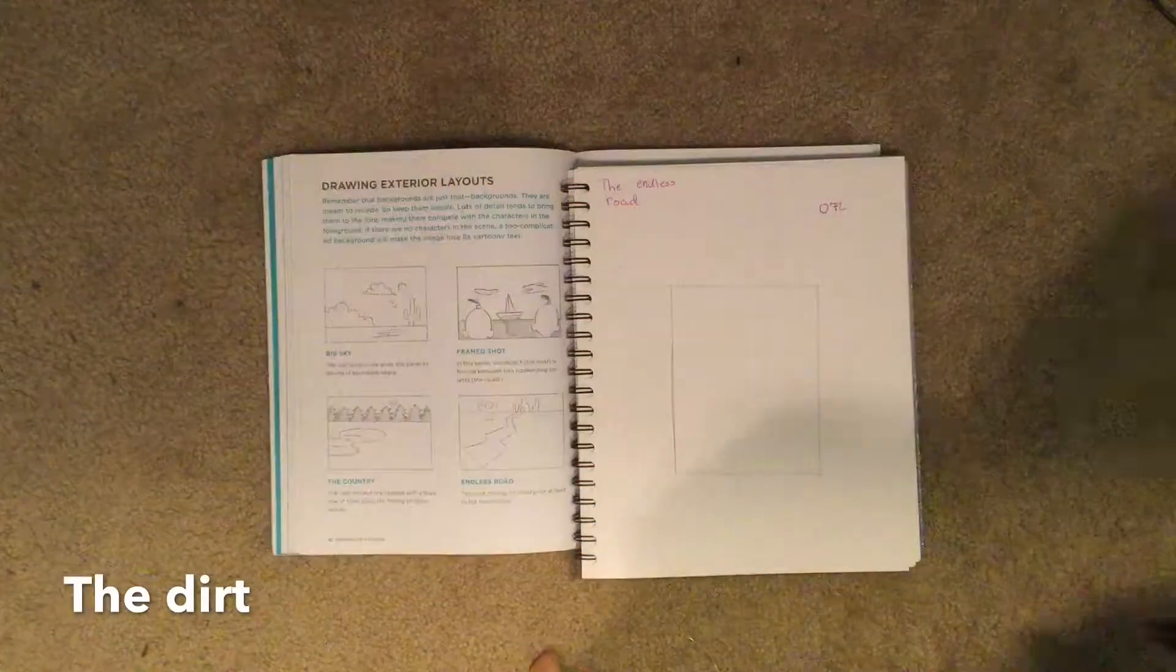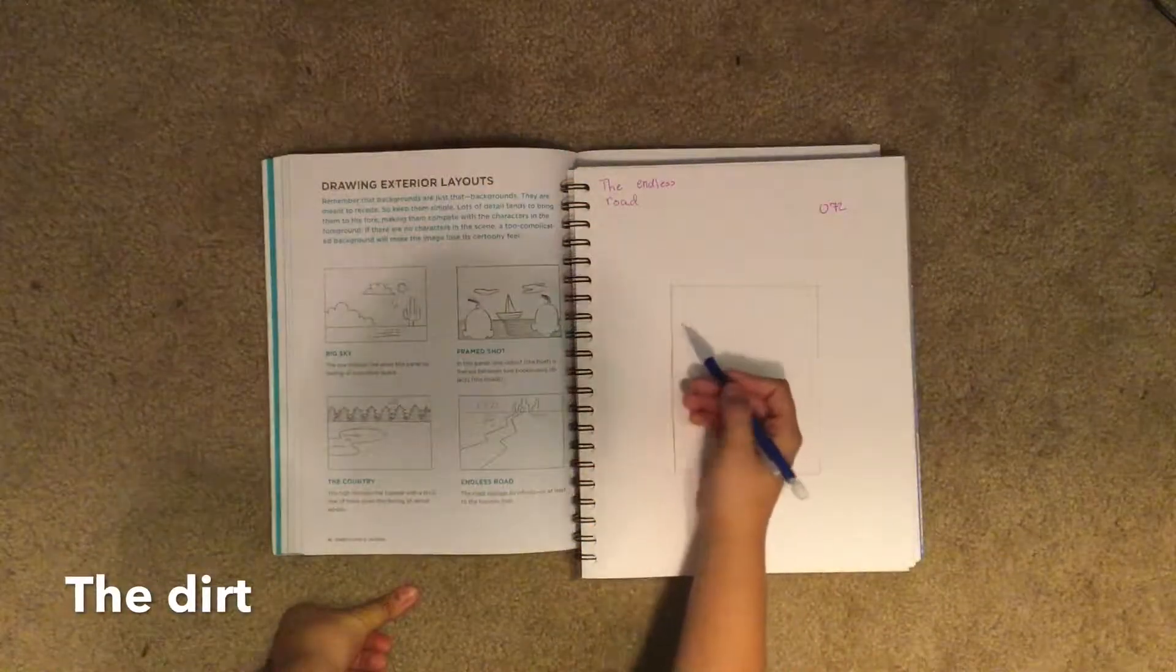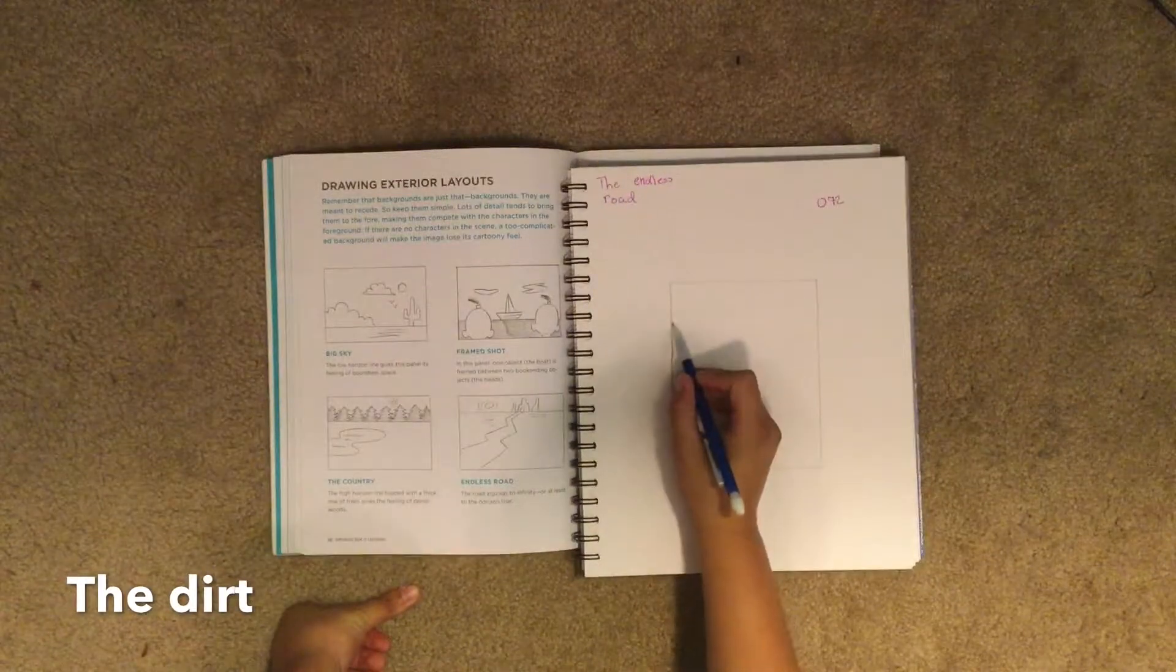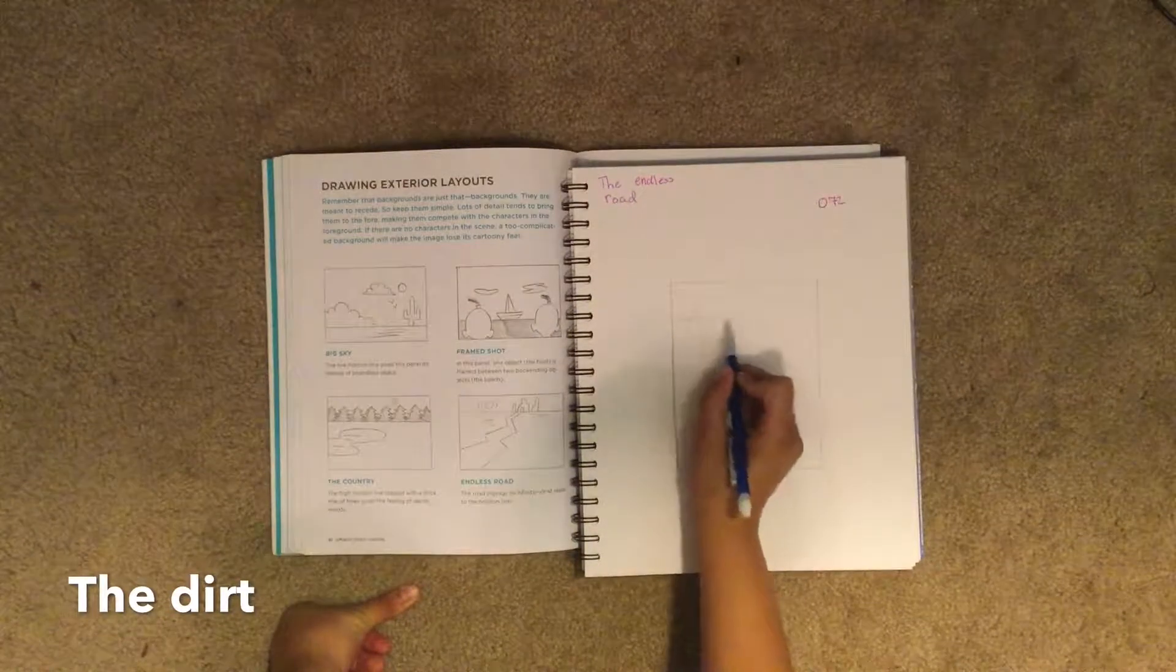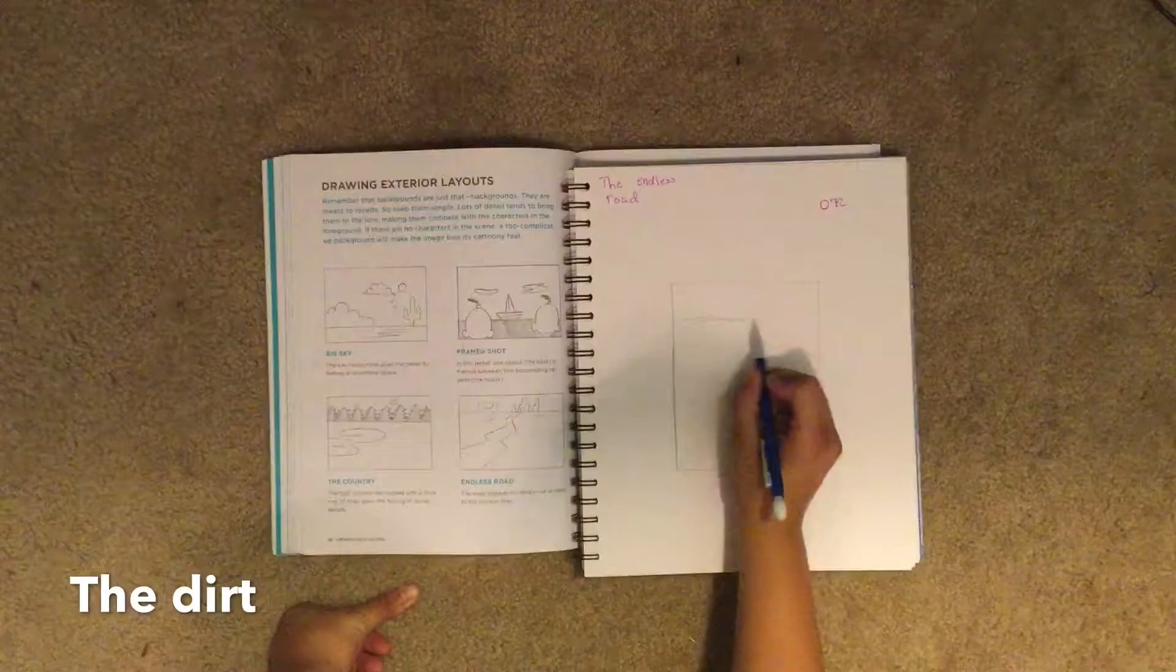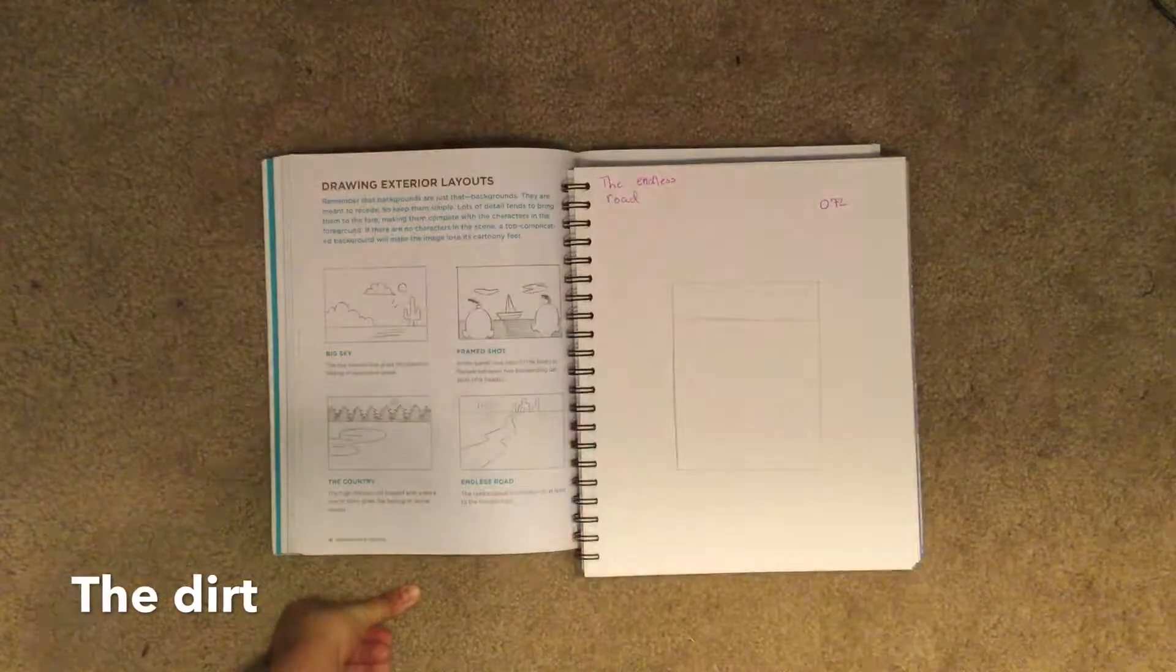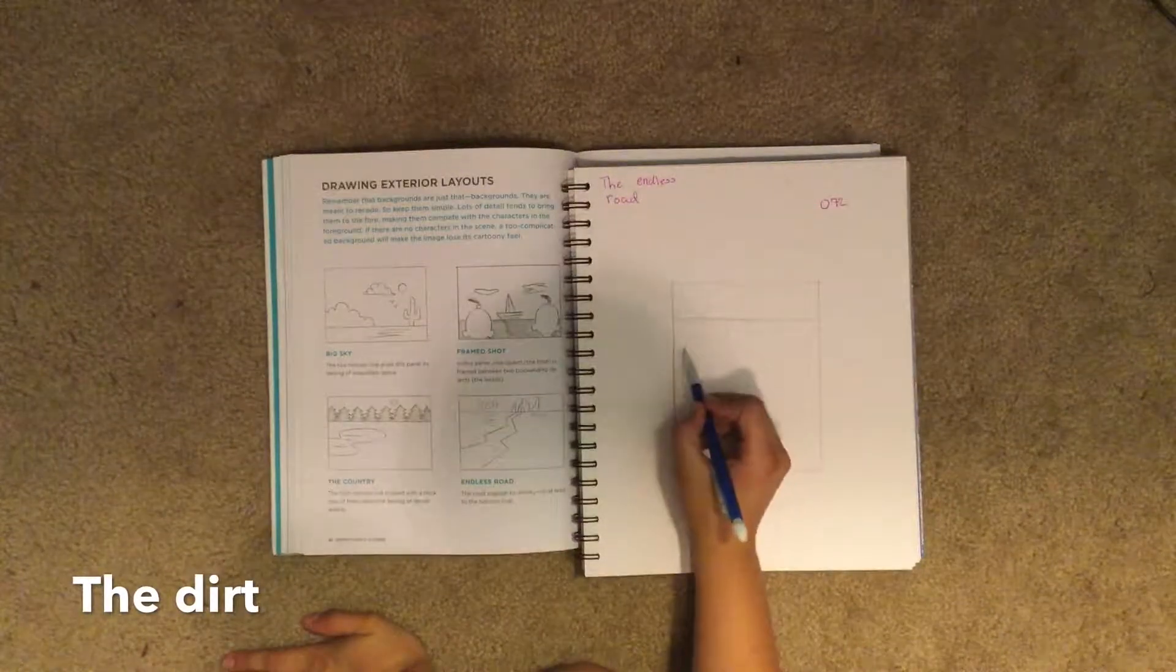First, we have to draw a line towards the top to show the dirt. Then we draw some lines down here.